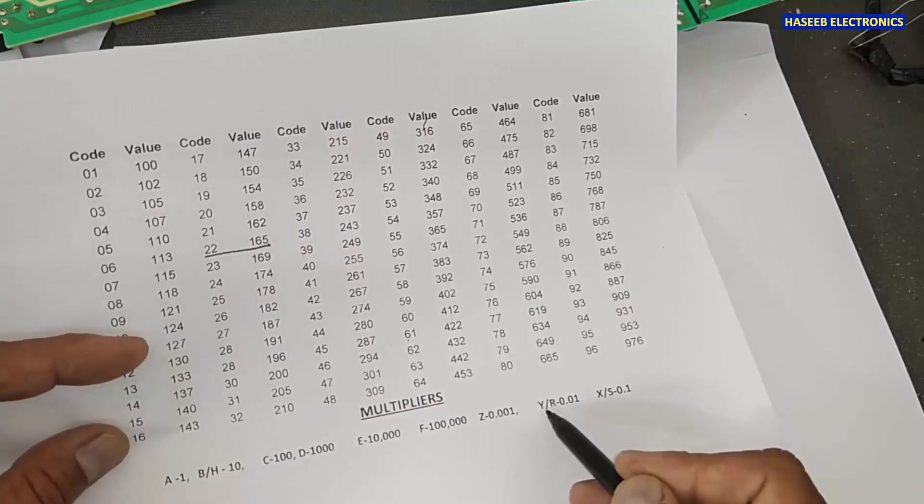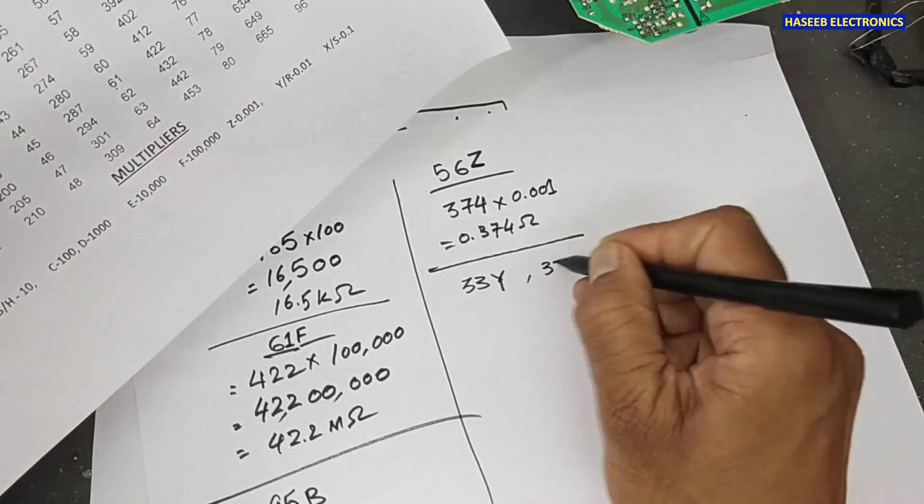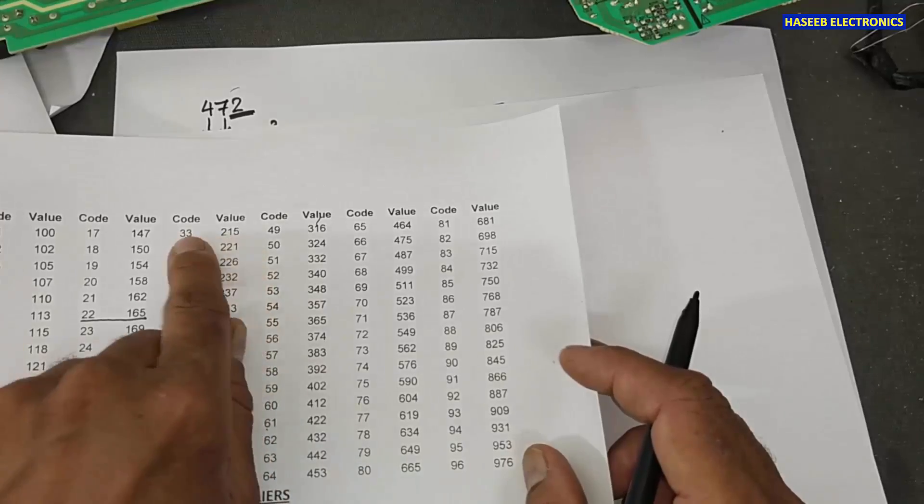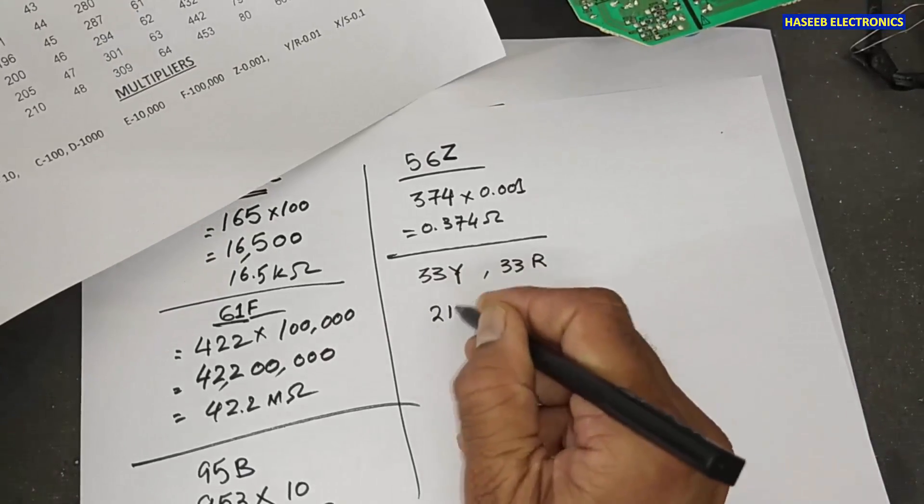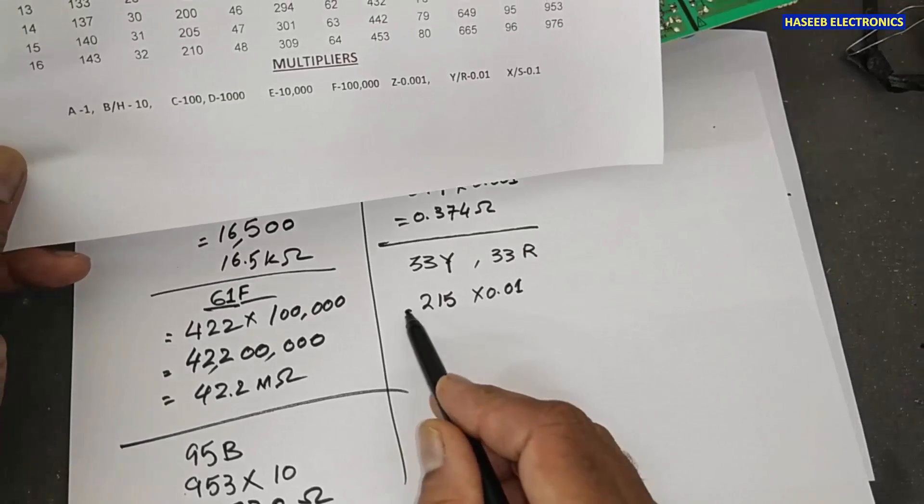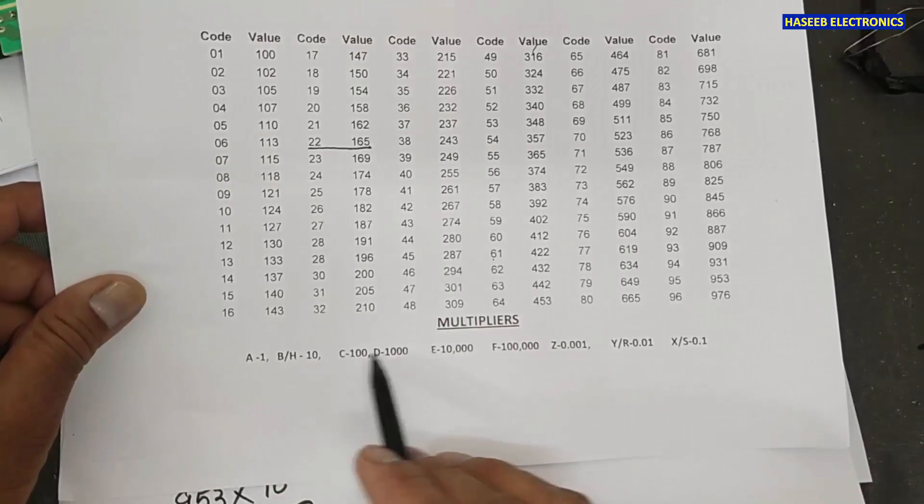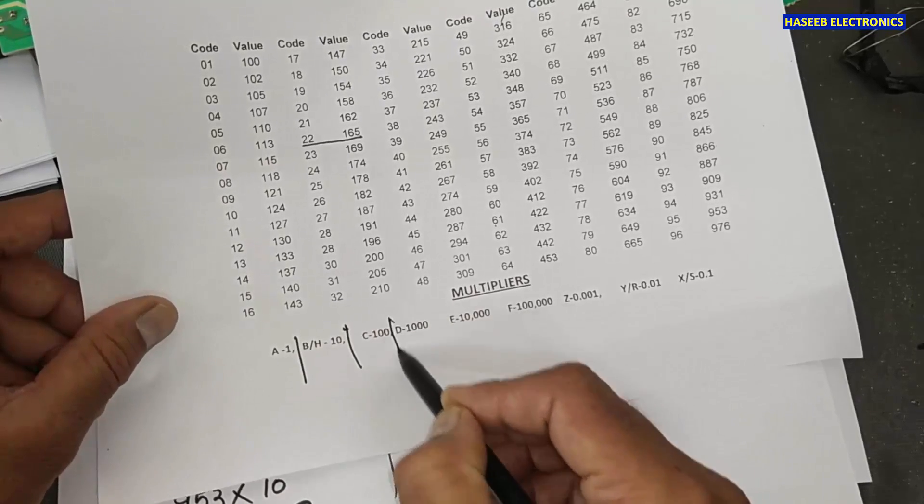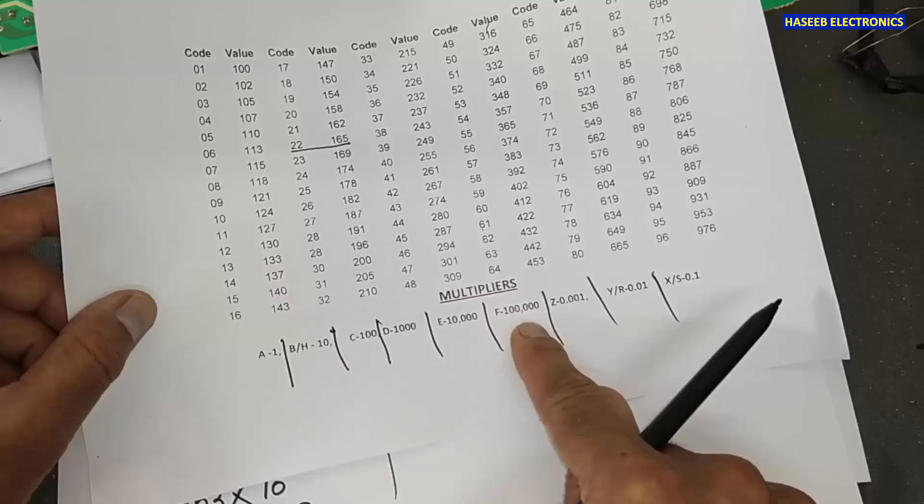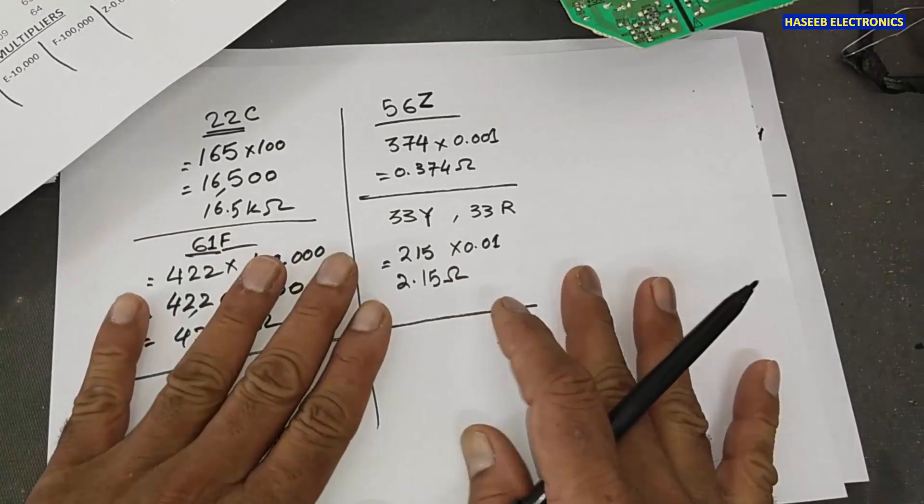33 Y or R. 33, that is 215. The multiplier is 0.01. Now, the resistor value here, 2.15 ohms. So, we will multiply with these numbers. A, B, C, R, D. We will select the multiplier. And we will multiply the coded value with this multiplier. And our resistor value will be here. It is an ohmic form.